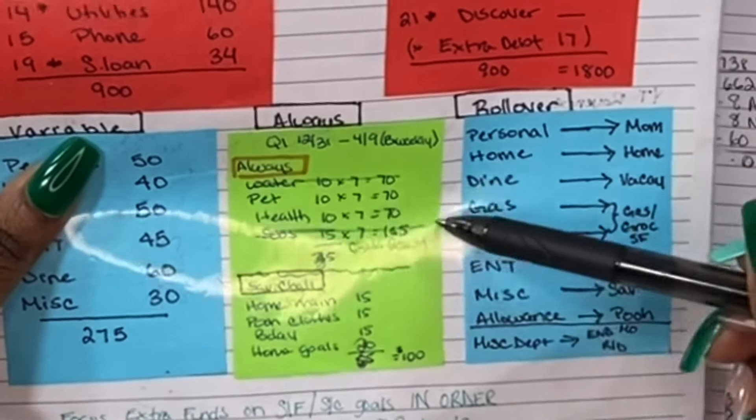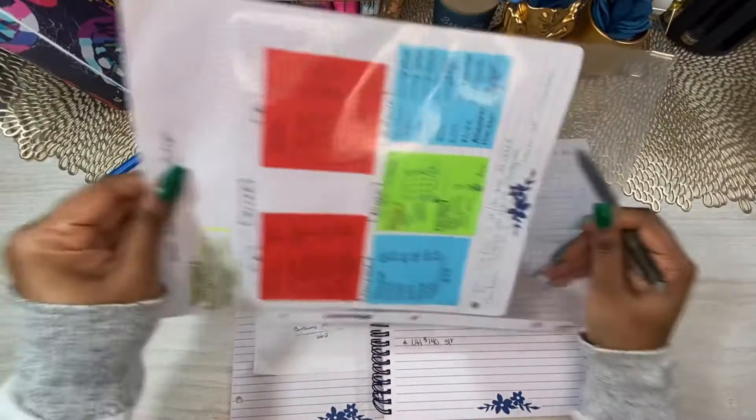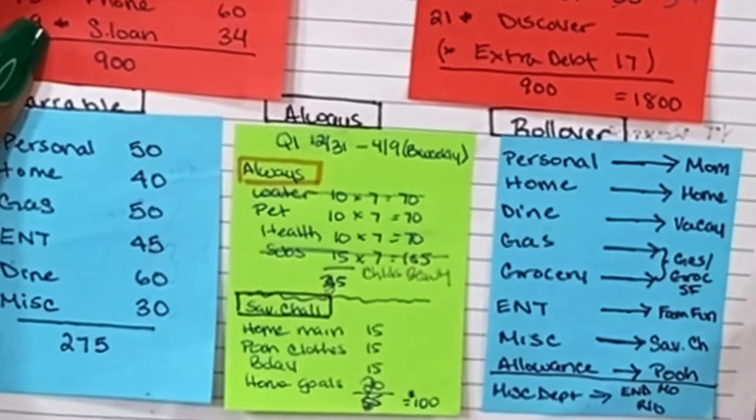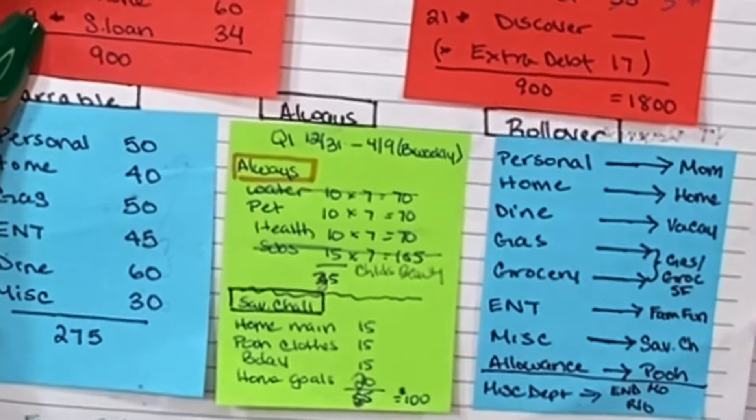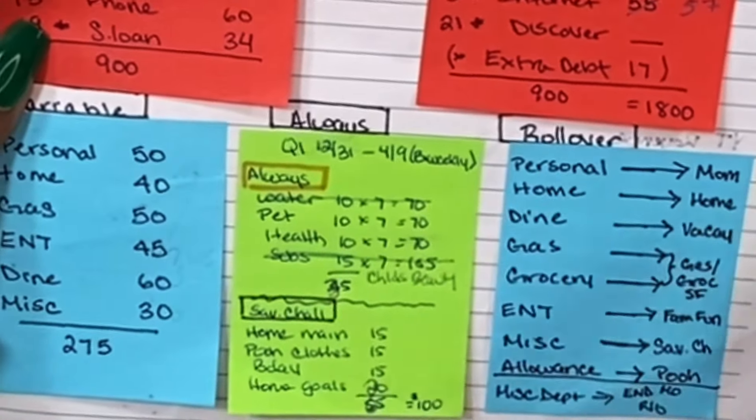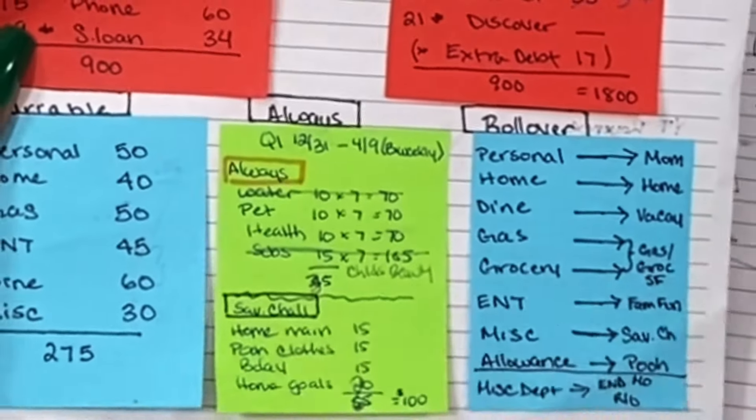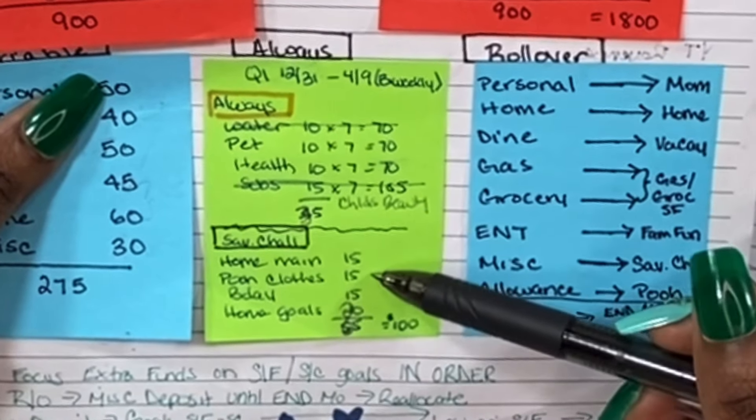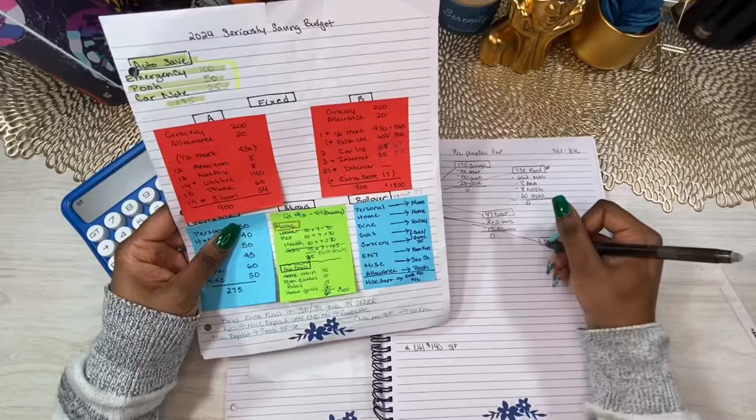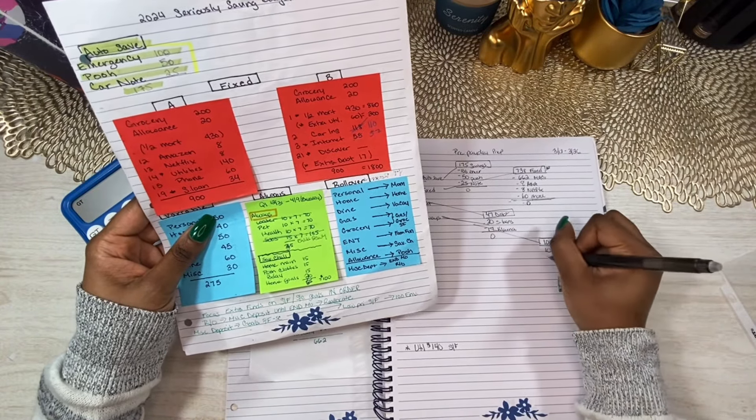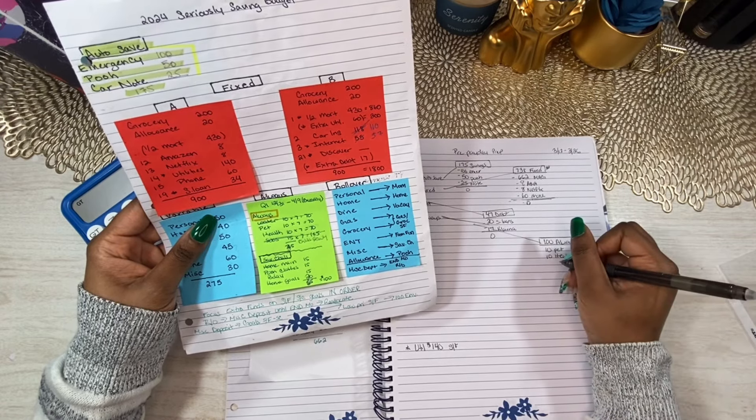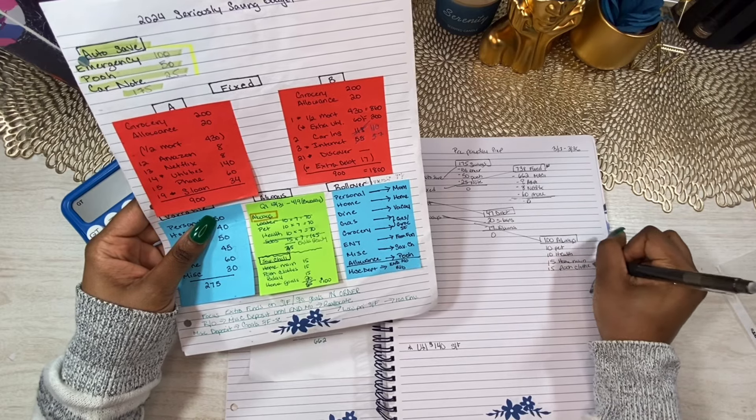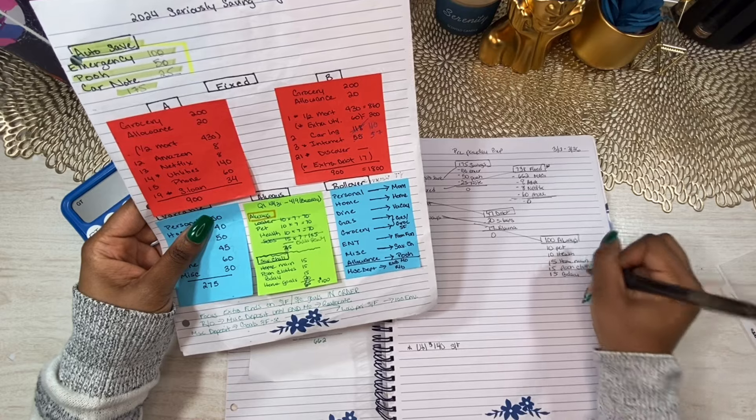So we decided to take out water and subscriptions because those are going to come from my income tax. I'm going to pay those off for the year with my income taxes. I try to be very careful with what I spend my income taxes on. Honestly, I got it a few weeks ago and I haven't spent a dollar because, of course, you guys know me. I like to figure it out before I spend any money. So this $100 is going to go, $10 is going to go to pet, $10 to health, $15 to home maintenance savings challenge, $15 to her clothes, $15 to birthday, and $20 is going to go into home gold.